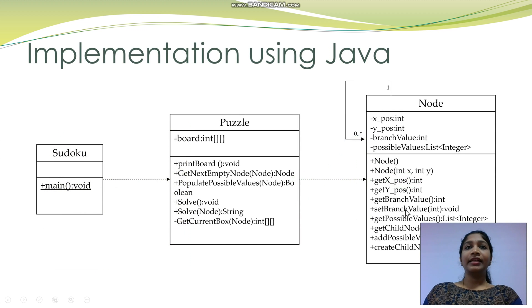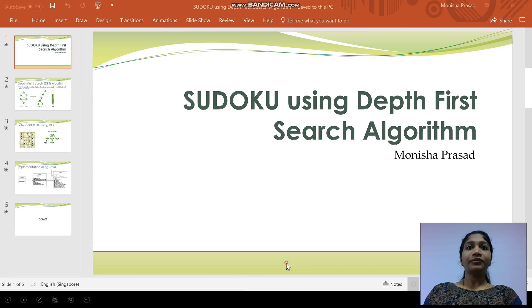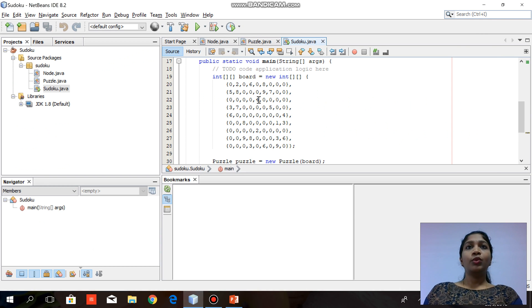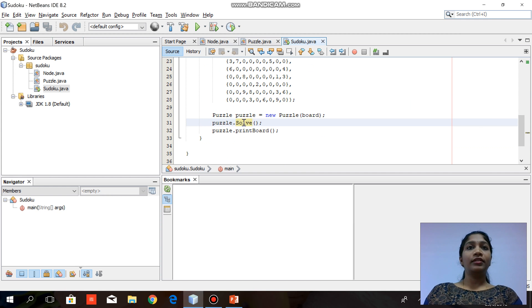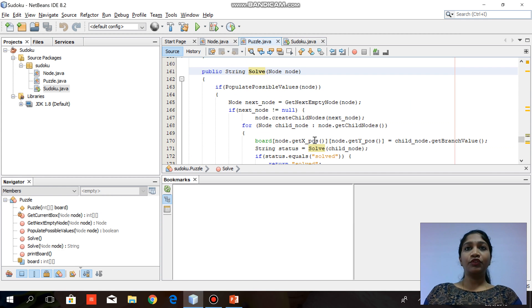There are 3 classes and these are the class diagrams. I have uploaded the code in GitHub and provided the link in the description. Let me now show you a demo. This is the main method and the Sudoku is represented as a two-dimensional array. Zeros here means that the cells are empty.